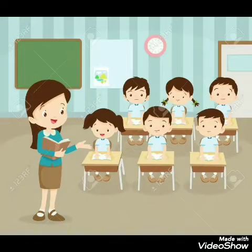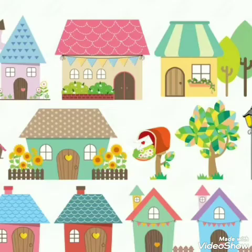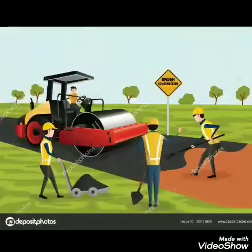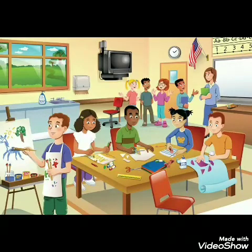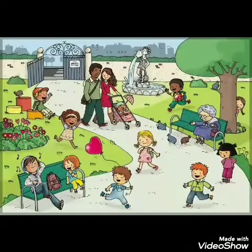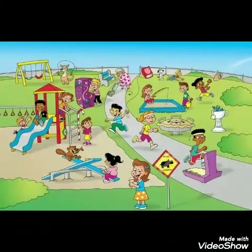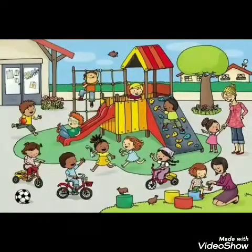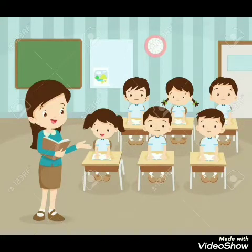Next we are going to see about Man-made Things. The things that are made by humans are known as man-made things. For example: house, cars, roads, buildings, table, chair, pen, pencil. A man-made environment refers to the surroundings made by humans to provide facilities for satisfying human needs — to have a place for people to work, live, educate others, and meet day-to-day needs. So, things that are made by humans we can call man-made things.